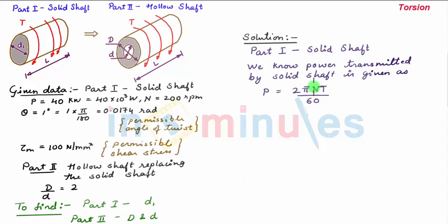So upon substituting the values of power and n, we have power is 40 kilowatt, so 40×10³ watt, this is equal to 2π into n is 200 rpm multiplied by T, this whole upon 60. So upon solving this we get the value of T as 1.909×10³ newton meter.